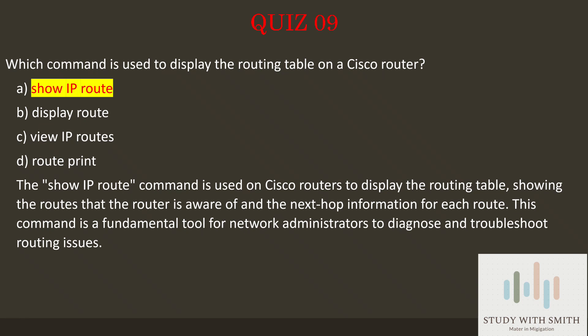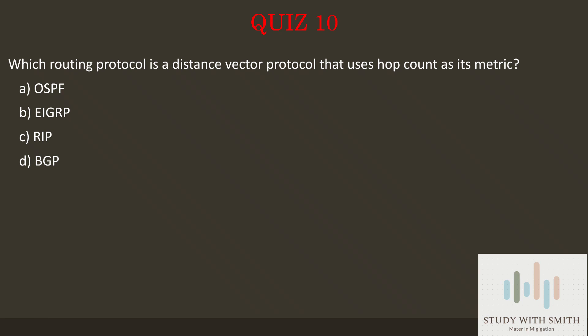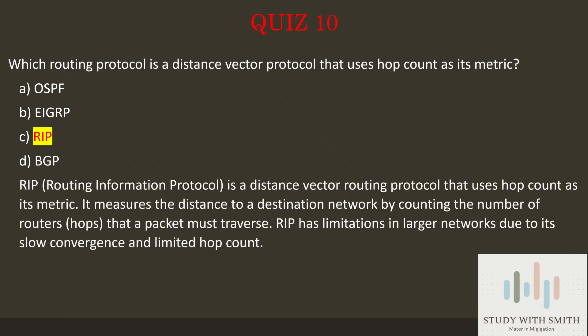Question 10: Which routing protocol is a distance vector protocol that uses hop count as its metric? The answer is C: RIP. RIP (Routing Information Protocol) is a distance vector routing protocol that uses hop count as its metric. It measures the distance to a destination network by counting the number of routers (hops) that a packet must traverse. RIP has limitations in larger networks due to its slow convergence and limited hop count.